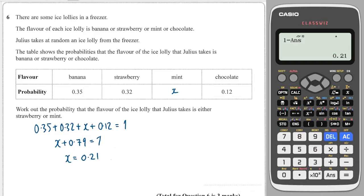Okay, great. Now we know what that is and we're asked to work out it's either strawberry or mint. Now whenever I see the word or in probability, it means I must add. If I were to see the word and, then that would mean I would times. But because we see the word or, we add. So I add strawberry and mint, which is 0.32 plus 0.21 and that gives me a total of 0.53.